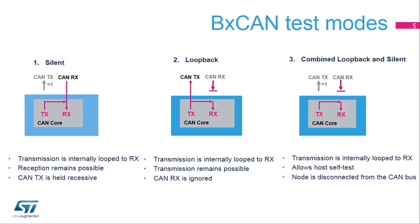In loopback mode, the BX CAN treats its own transmitted messages as received messages and stores them, if they pass acceptance filtering, in a receive mailbox. Loopback mode is provided for self-test functions. In combined loopback and silent mode, the BX CAN can be tested in loopback mode but without affecting the running CAN system connected to the CAN TX and CAN RX pins.